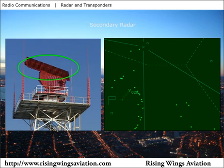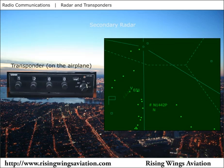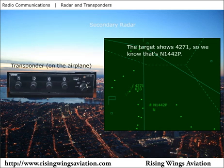The four-digit transponder code can be set by the pilot. An air traffic controller may request a specific code by stating "squawk" and the requested code. For example, "Cessna 42 Papa, squawk 4271." Each of the four digits are selectable between 0 and 7, allowing 4096 possible codes.